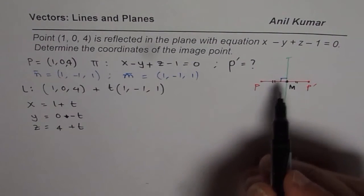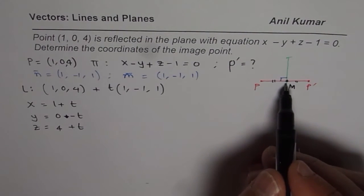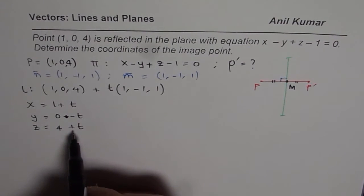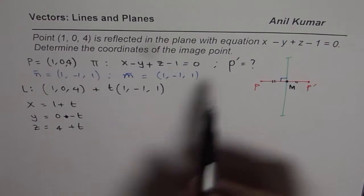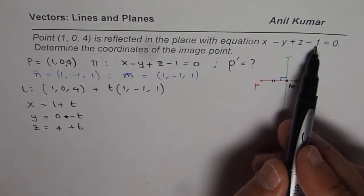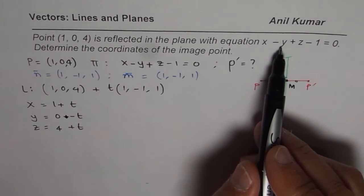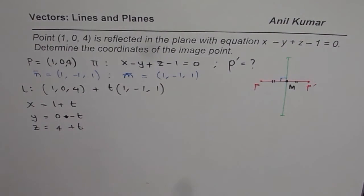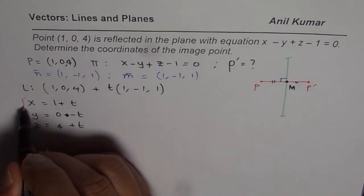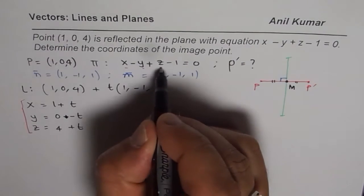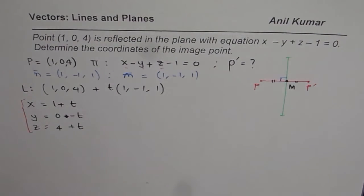Let us first find M, the point which is common to the plane and the line. That should be found by placing the values of x, y, z into the plane equation, which is x minus y plus z minus 1 equals 0. We will substitute the values of the general point into the given equation and solve for parameter t.